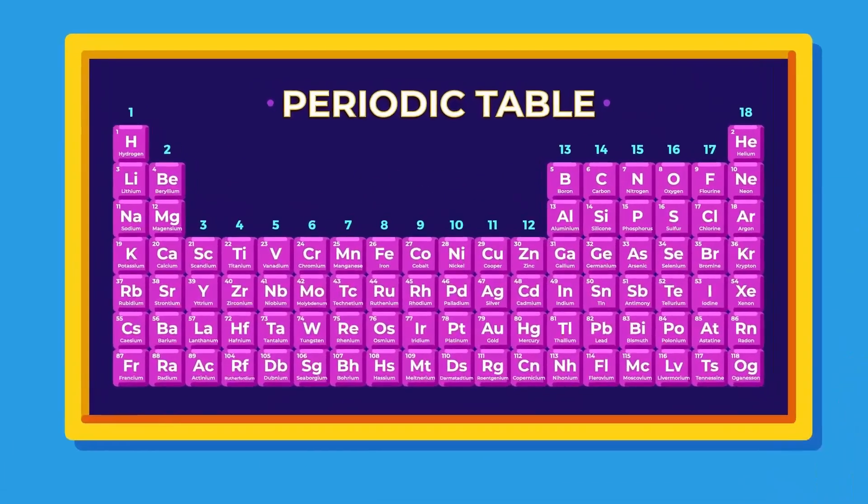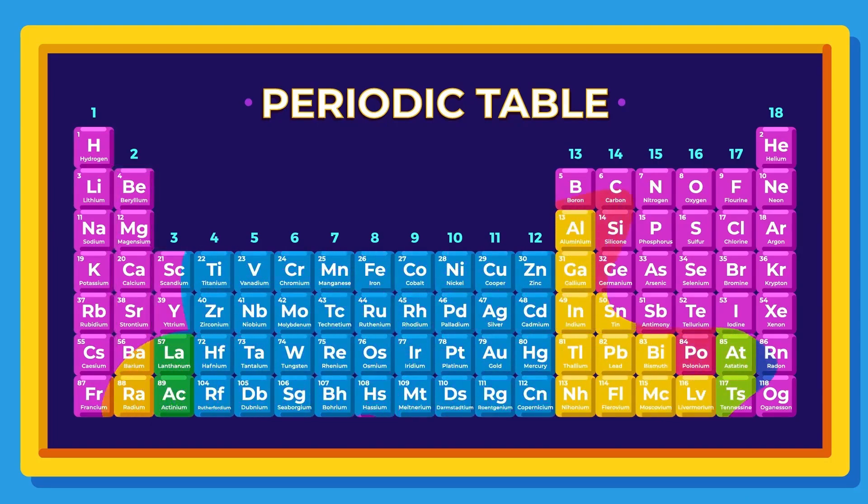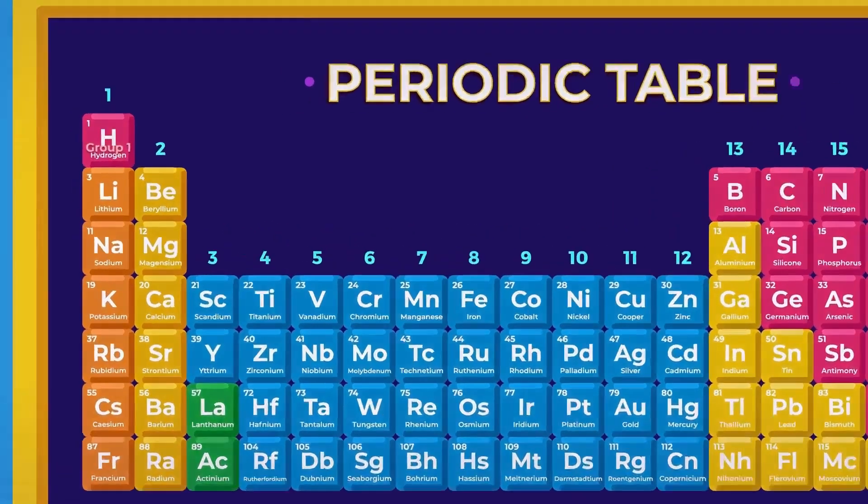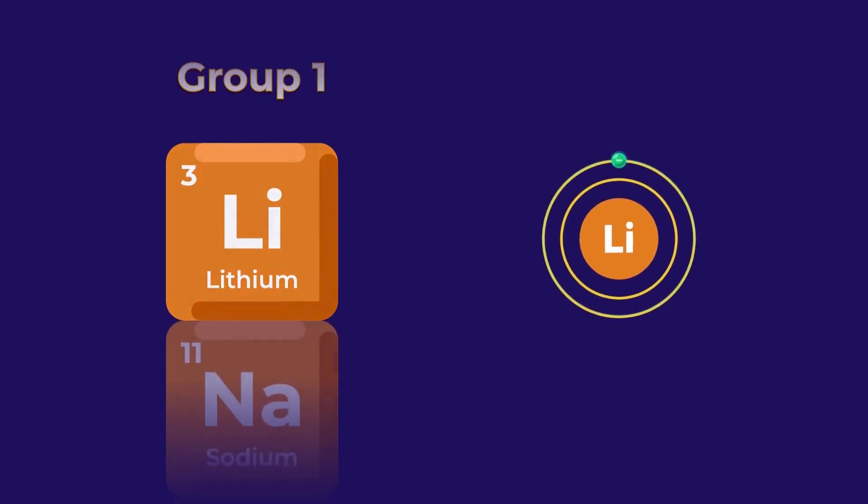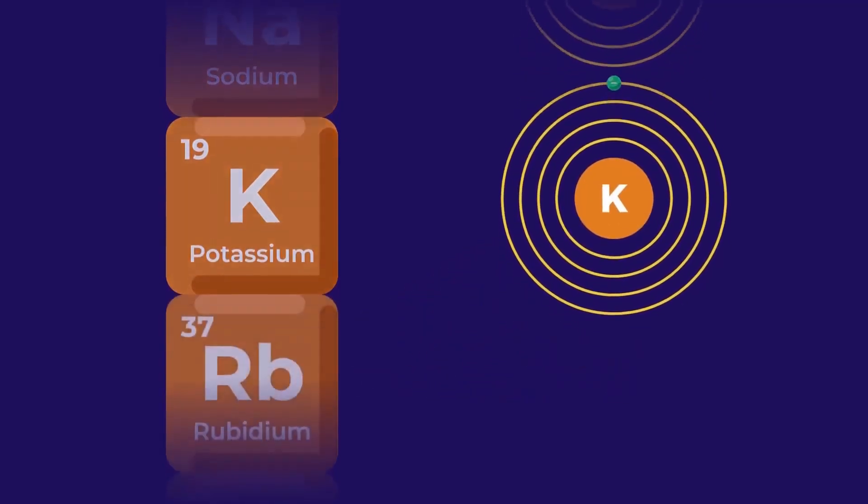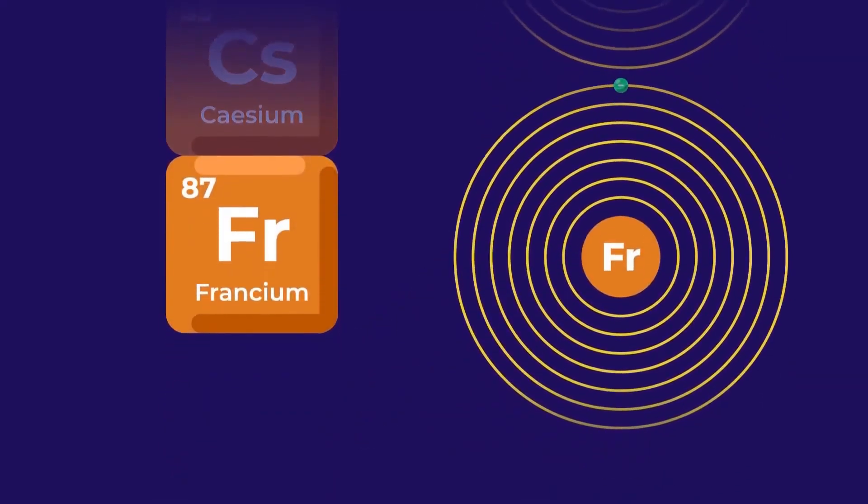Now let's move on to groups. Groups are the vertical columns in the periodic table. Much like in periods, elements in the same group will have similar properties and are given numbers that indicate the number of electrons in the outermost shell, or valence electrons, of that element's atoms. This means that all atoms within a specific group will have the same amount of electrons on their outer shell.